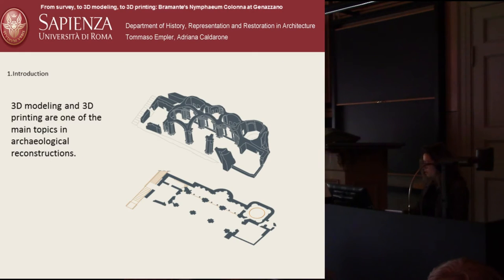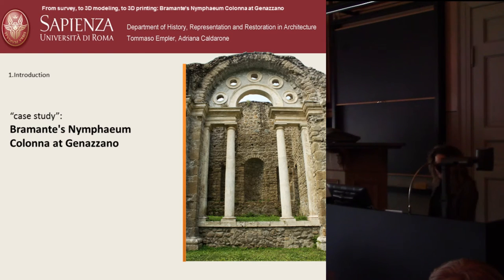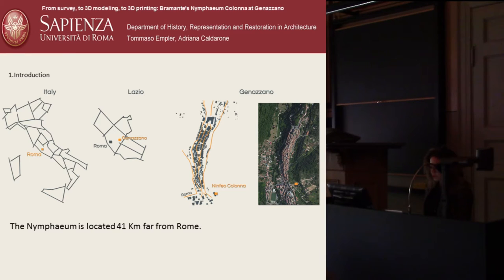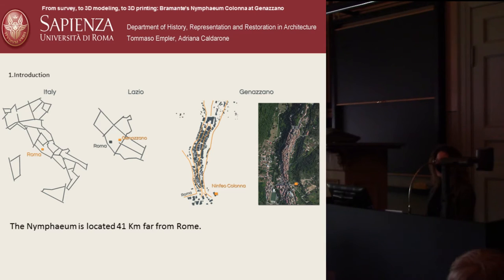The object of the study is the Nymphae Colonna in Genazzano, Italy. We are in Italy, in Lazio, in a town of 6,000 inhabitants, about 60 kilometers from Rome. Genazzano was a strategic point connecting Rome, the capital, to the south of Italy. In the 15th century, Genazzano was made a cultural environment and a proper stronghold by its relationships with the Colonna family.